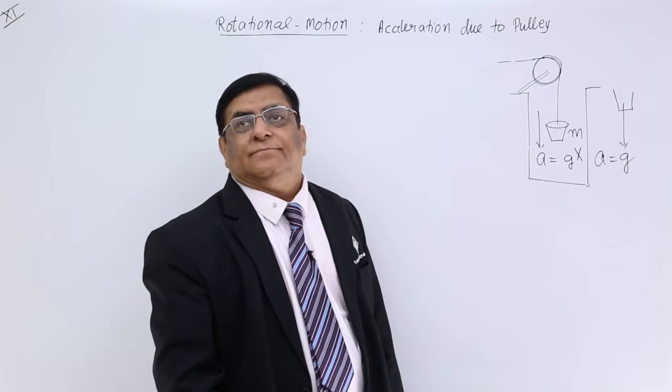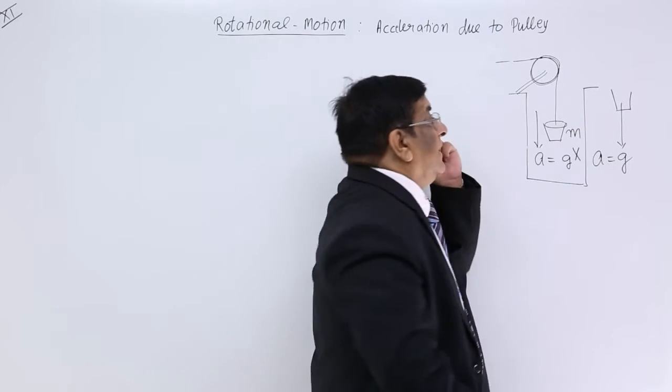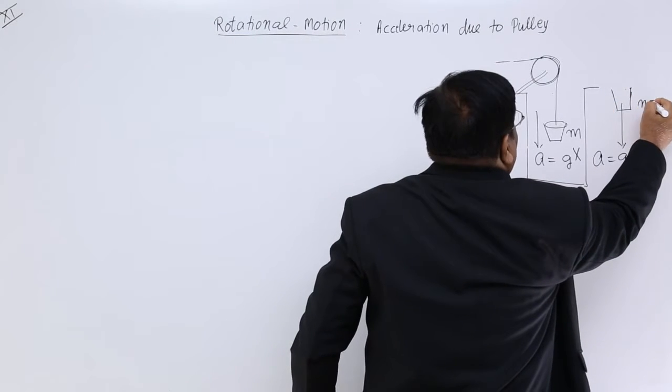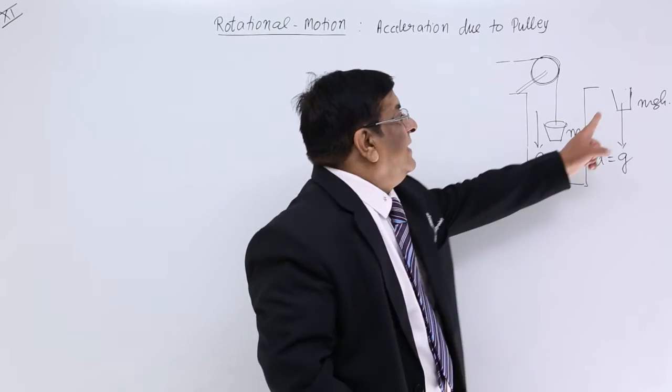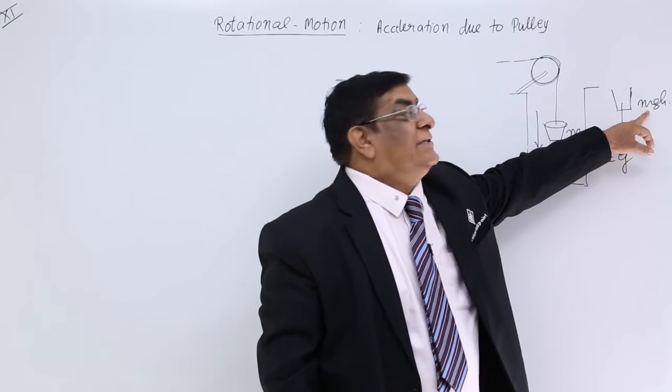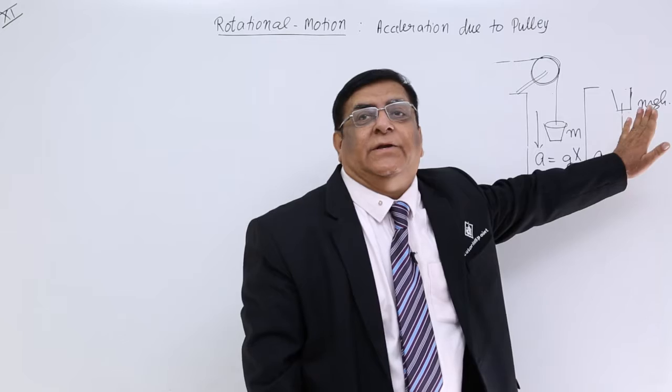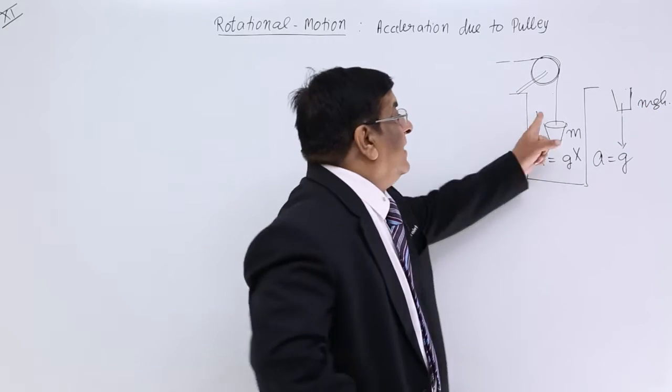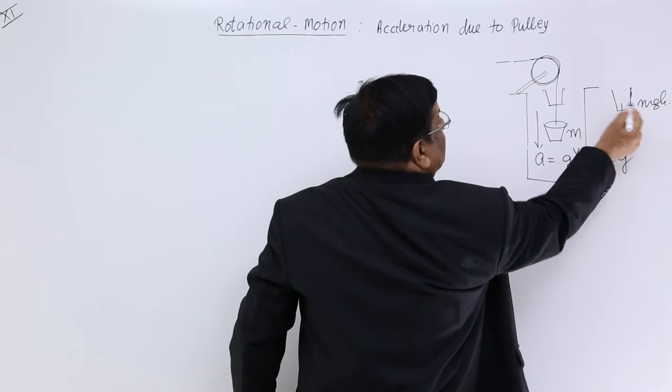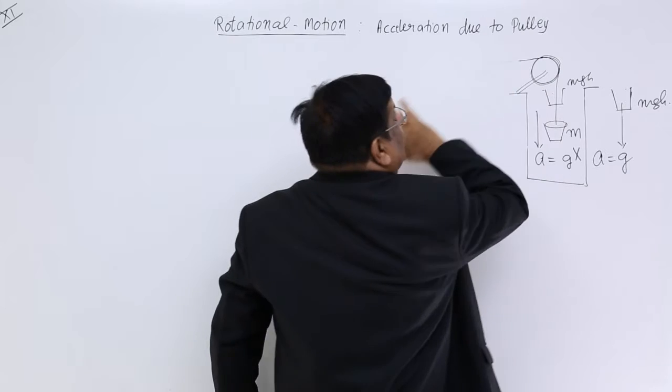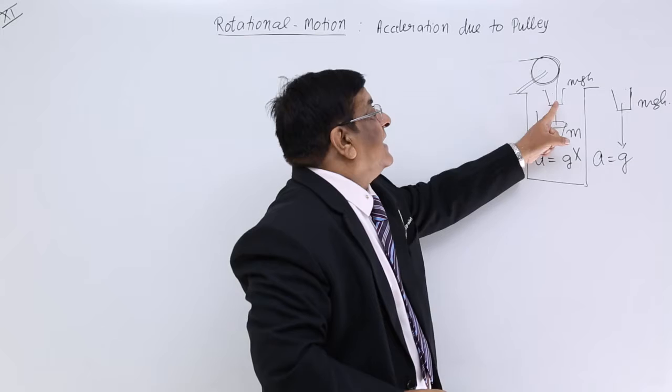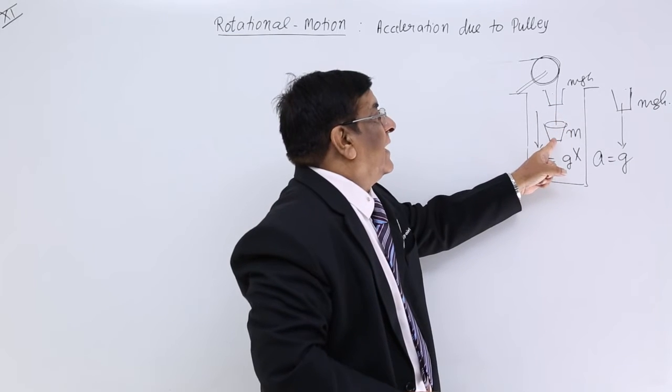Why? Because here it has the energy at this level. That energy is equal to mgh. When it is falling down, the complete energy is being converted into kinetic energy of this bucket and of this bucket only. Here again, when this bucket was here, this was having potential energy mgh. We leave it, allow it to fall down. It wants to use its energy as kinetic energy of the falling bucket, but it cannot.